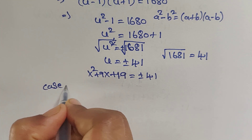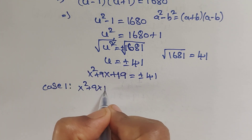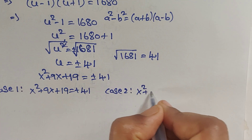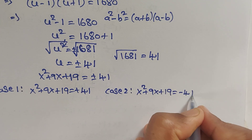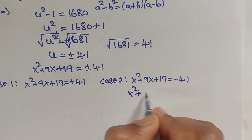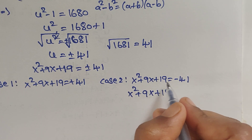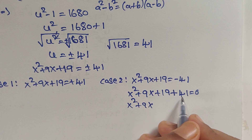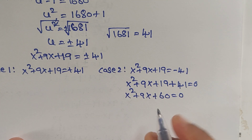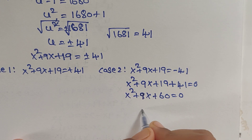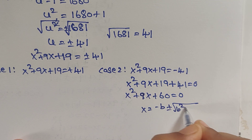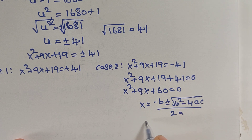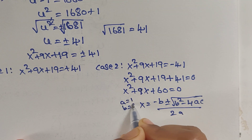Case 1: x²+9x+19 = 41. Case 2: x²+9x+19 = −41. For Case 2, moving all terms to one side gives x²+9x+60 = 0. Applying the quadratic formula with a=1, b=9, c=60.